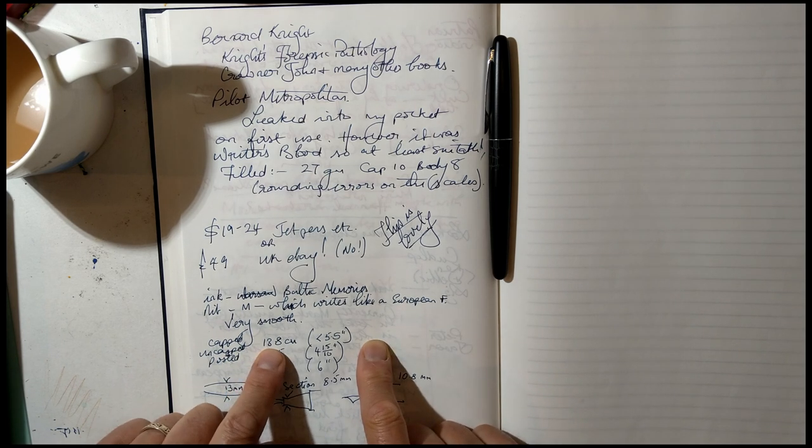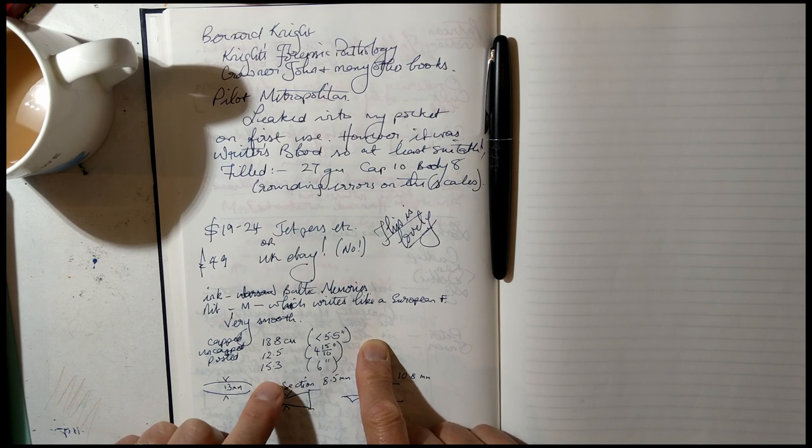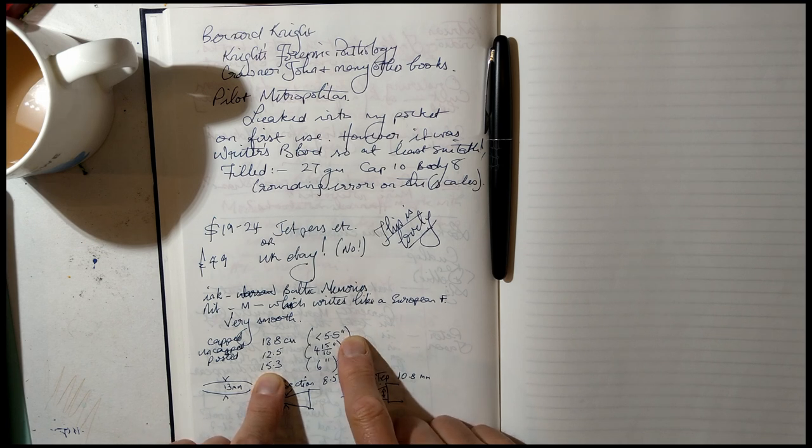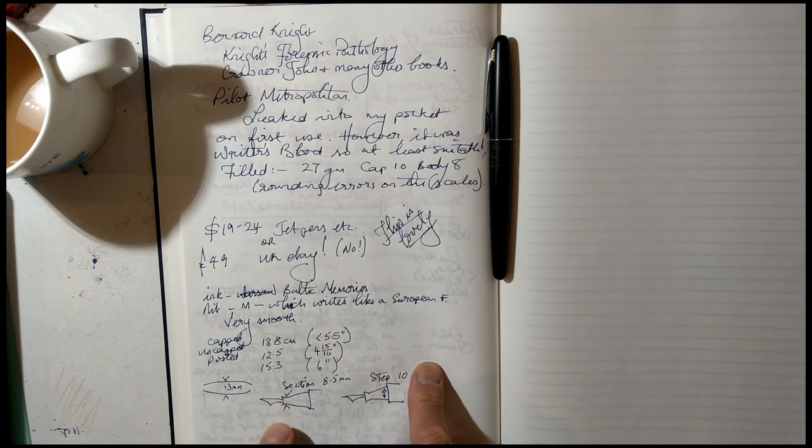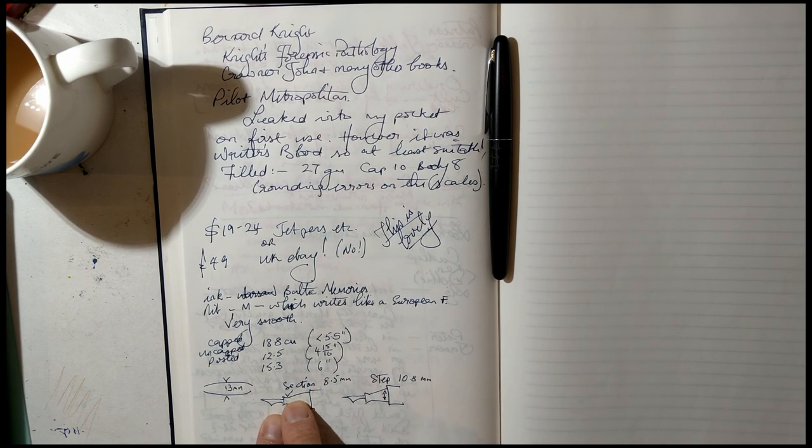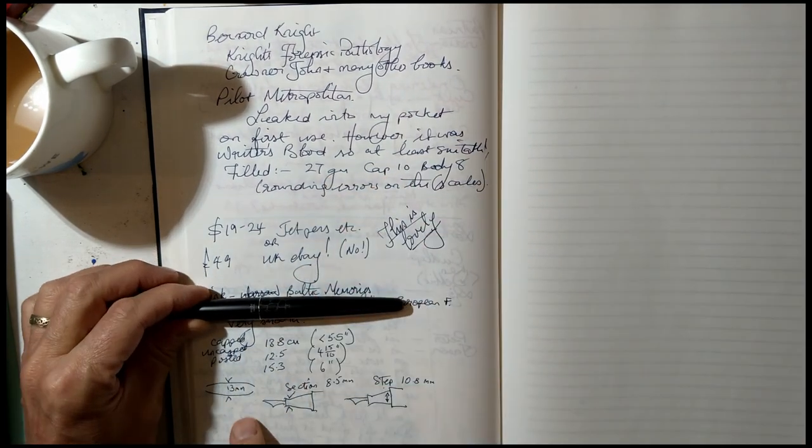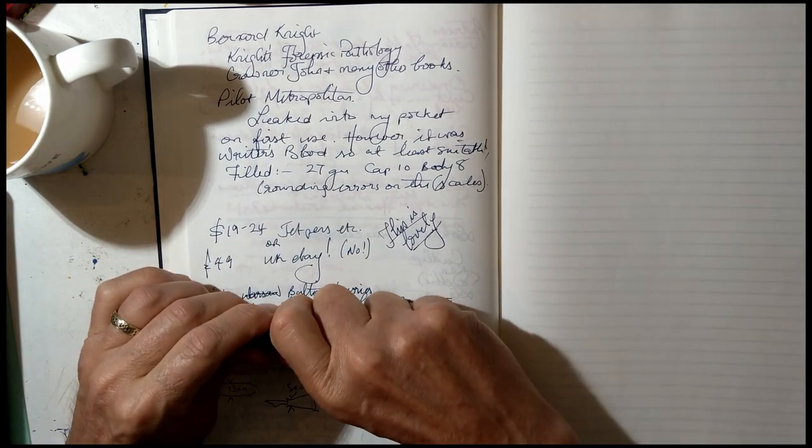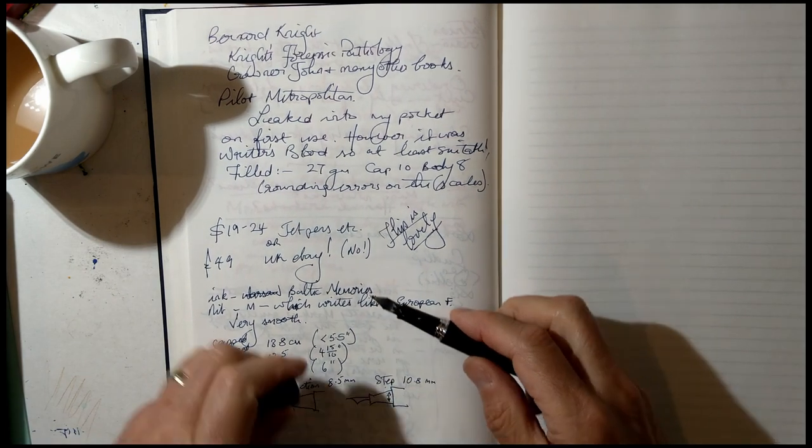Total size is capped, 13.8 centimeters, 12 and a half if it's uncapped, 15.3 if it's posted, which if you're English or American, that's 5 and a half inches, 4 and 15 sixteenths or 6. The section is at the narrowest 8 and a half millimeters, at the widest part here it's 13, and at the top of the step here where the chrome plating is, is 10.8.